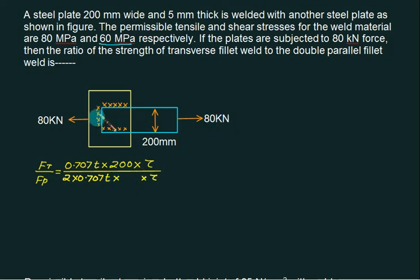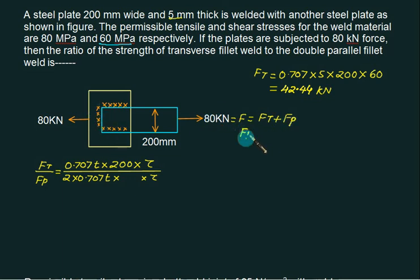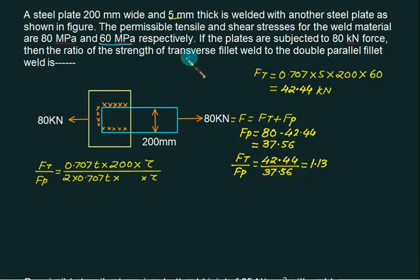We have to calculate this length. Total force is 80 kN. F transverse equals 0.707 times 5 times 200 times 60, which is 42.44 kN. The parallel force is 80 minus 42.44 equals 37.56 kN. The ratio F transverse to F parallel is 42.44 divided by 37.56 equals 1.13.